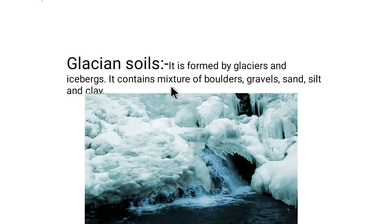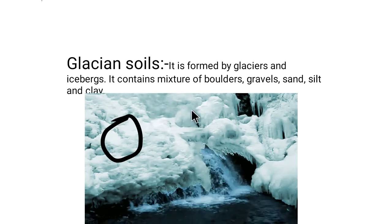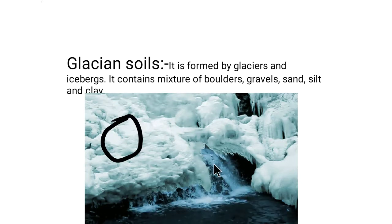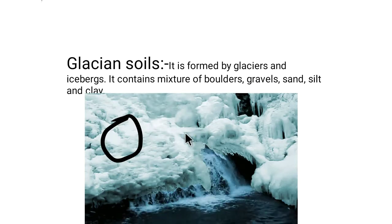Next is glacial soil, which is formed by glaciers and icebergs. It contains a mixture of boulders, gravel, sand, silt, and clay. As you can see, the soil is transmitted by ice glaciers. Glacial soils are found in the Himalayan region or in very cold areas, including other countries where temperatures go to minus degrees Celsius.